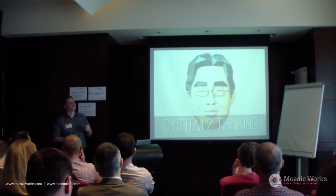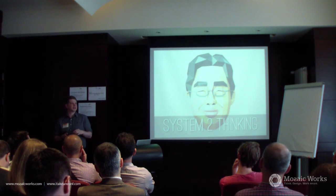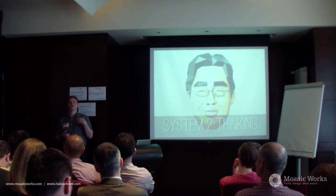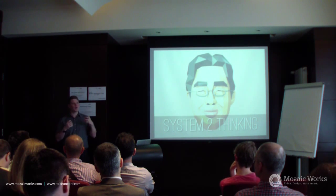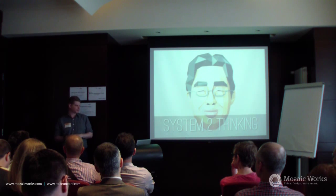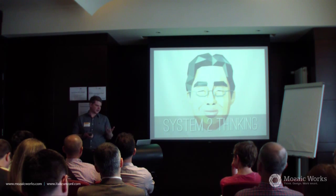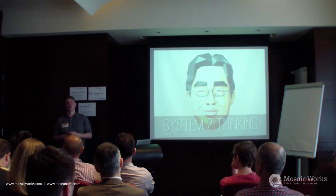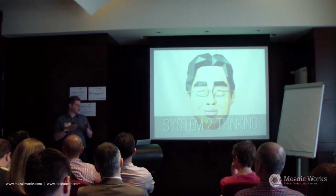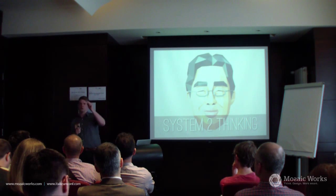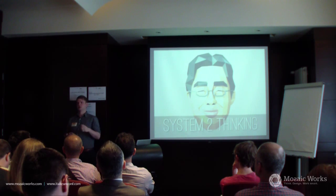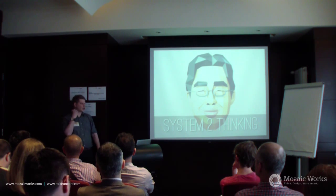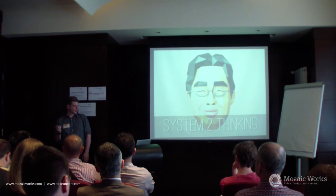The other way of thinking is System 2 thinking — that's more deliberate and slow. We use System 2 when we want to solve problems and actively focus on things. Debugging is a good example: you have to actually focus on what you're doing, step through it, think 'why is this doing this?' You can't just go straight to the answer. It's conscious thought.